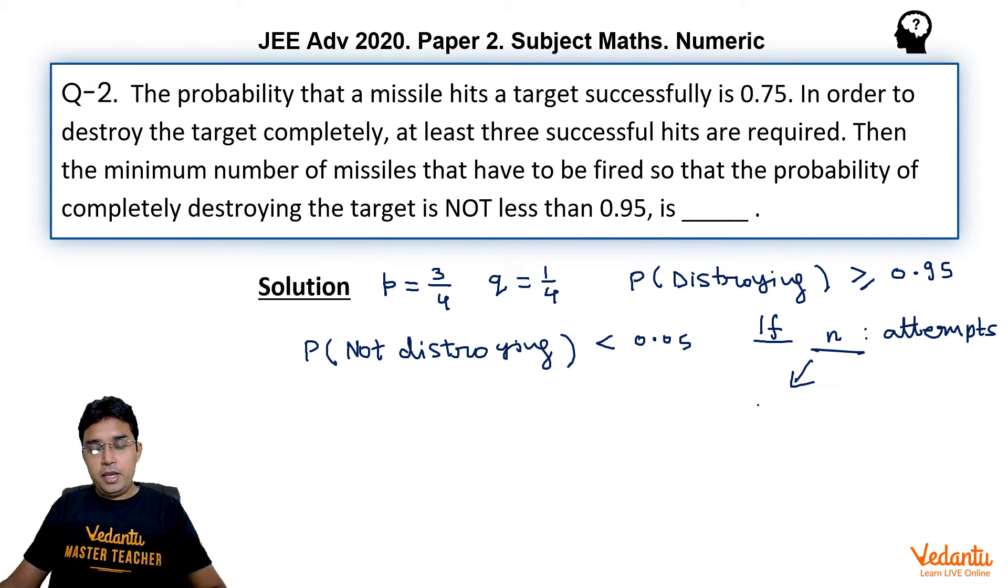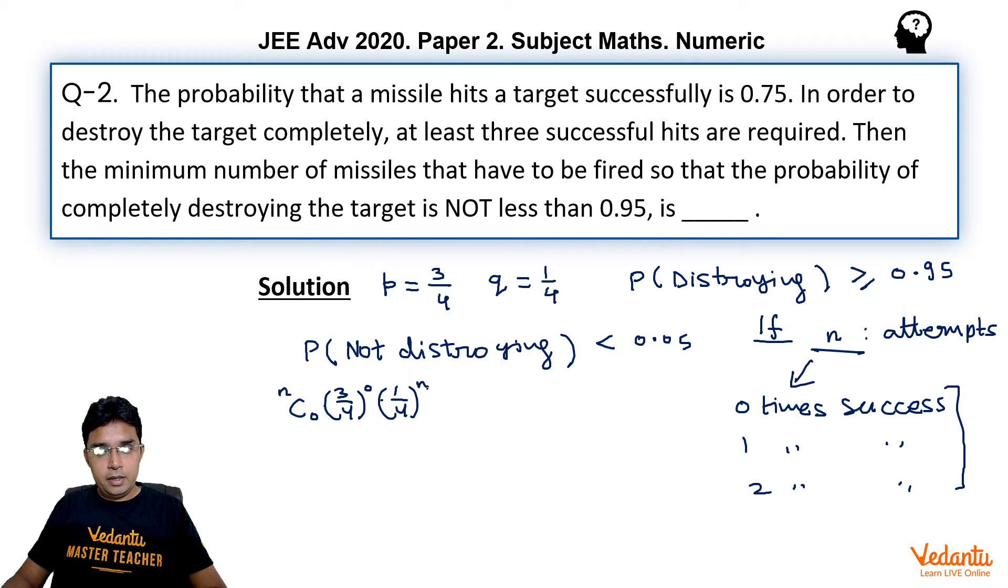That out of this n, we hit only 0 times or you can say 0 times success or 1 times success or 2 times success. Because if success is more than or equal to 3, then it will be destroyed. So we have to find the probability that number of successes out of n are either 0 or 1 or 2. Now using the formulas of binomial distribution, we can write it directly for 0 times success. It will be nC0 into 3 by 4 raised to the power 0 into 1 upon 4 raised to the power n plus nC1 into 3 upon 4 raised to the power 1 into 1 upon 4 raised to the power n minus 1 plus nC2 into 3 upon 4 raised to the power 2 into 1 upon 4 raised to the power n minus 2 and that should be less than 1 upon 20.